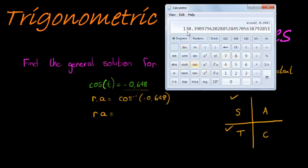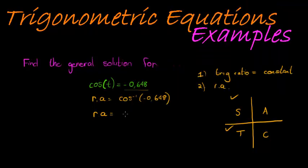So inverse cos gives me 130.39 degrees. This is my reference angle. In which quadrant is that? Well, that's clearly second quadrant - it's more than 90, less than 180. So that's second quadrant for you.